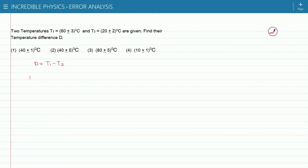So first of all we have to find the mean value of the difference quantity D for which we have to place the mean value of T1 which is 60 minus the mean value of T2 which is 20. Hence, 40 degree Celsius is the mean value of the quantity D.